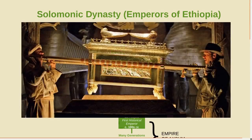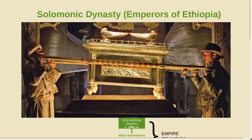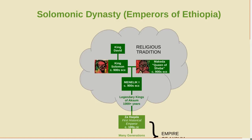The Ark of the Covenant is that golden box featured in the Indiana Jones movie Raiders of the Lost Ark. It supposedly held the Ten Commandments inside. So if you want to find the Lost Ark, you might want to start in Ethiopia. But let's get back to the dynasty.